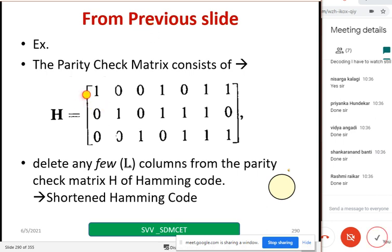From the previous example, H can be taken, or in general you can take P transpose or P. If you delete any few columns from the parity check matrix, automatically that will become a shortened Hamming code. The name itself gives the idea—shortened means I am removing one or more columns from the parity check matrix. I'll get a code that is a shortened Hamming code. We are not going to discuss any example, but you should know what a shortened Hamming code is and how it will be constructed.